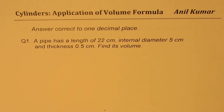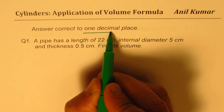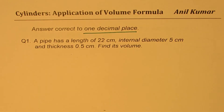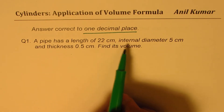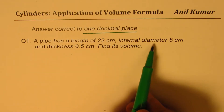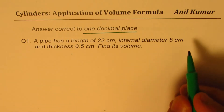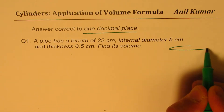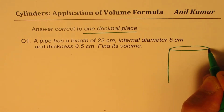Now let's try to understand and see how to solve the question. Remember, we need to round all the answers to one decimal place. Question number one: a pipe has a length of 22 centimeters, internal diameter 5 centimeters, thickness 0.5 centimeters. So let's draw one — this is kind of a pipe.